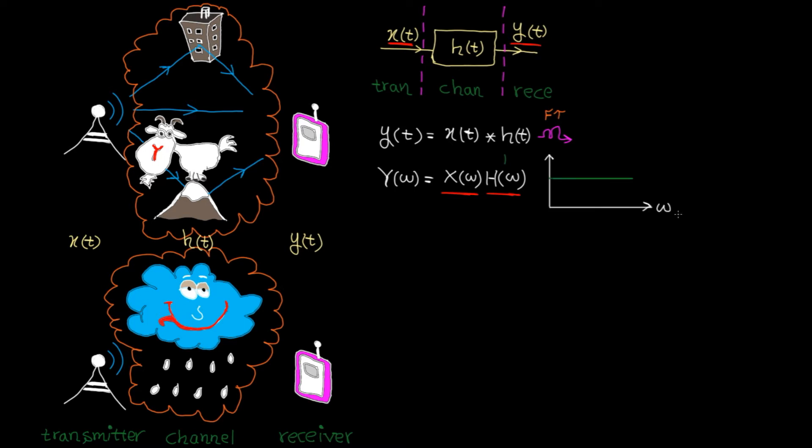This means the frequency response is 1 everywhere. So if H(ω) is 1, Y(ω) is equal to X(ω) and we can fully recover the message at the receiver side.